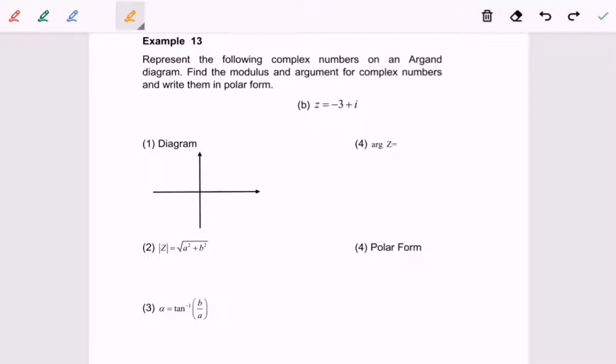Hello everyone, I'm going to discuss example 13b. Given that z is equal to negative 3 plus i.